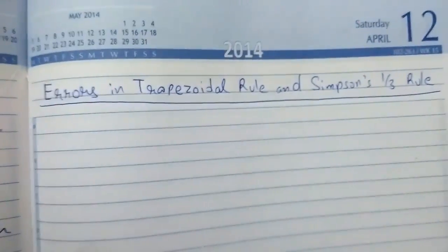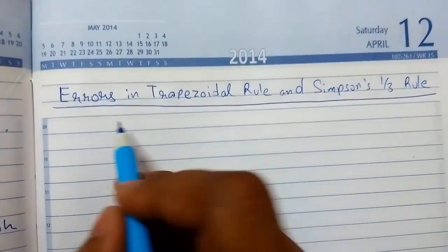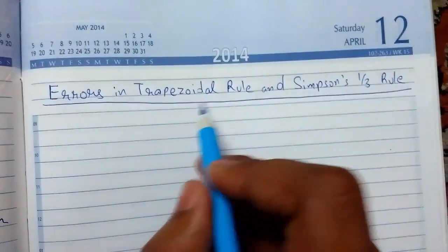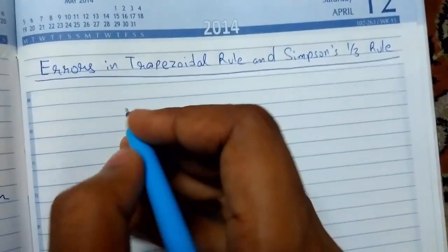Welcome back guys. Today we will be continuing numerical integration. We will be learning about the errors in trapezoidal rule and Simpson's rule. First, we will take the trapezoidal rule.